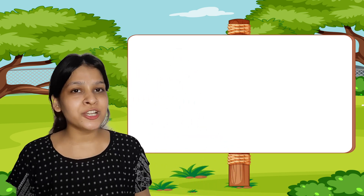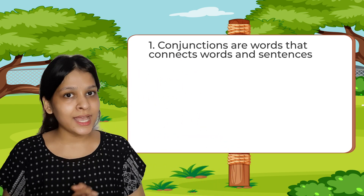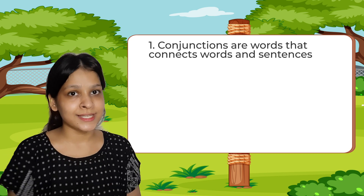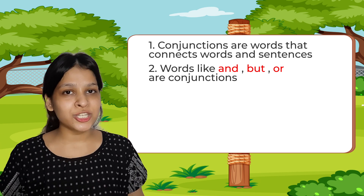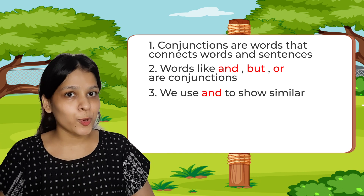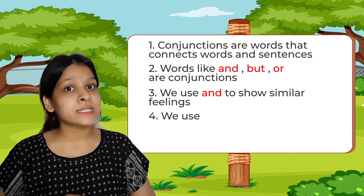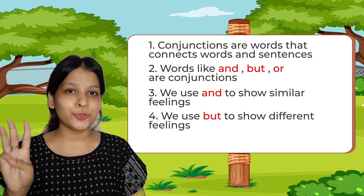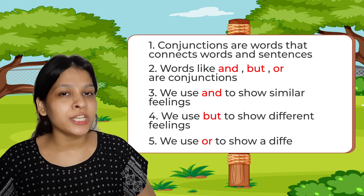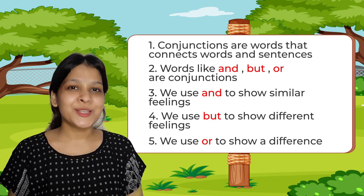You can use conjunctions in joining words and sentences. Let's do a quick recap. Conjunctions are words that help in joining words and sentences. Words like and, but, and or are conjunctions. We use 'and' when we have to portray a similar feeling. We use 'but' when we have to portray a completely different feeling. We use 'or' when we have to make a choice. That was it, children. Thank you. Bye.